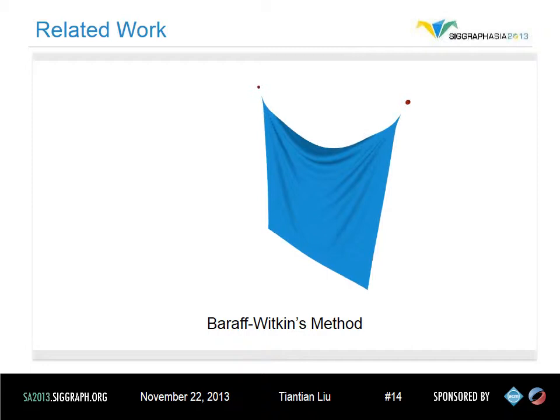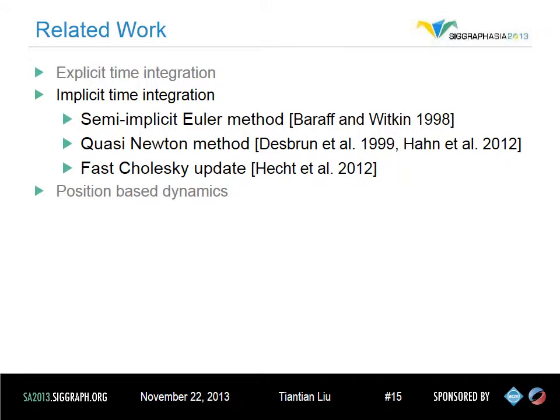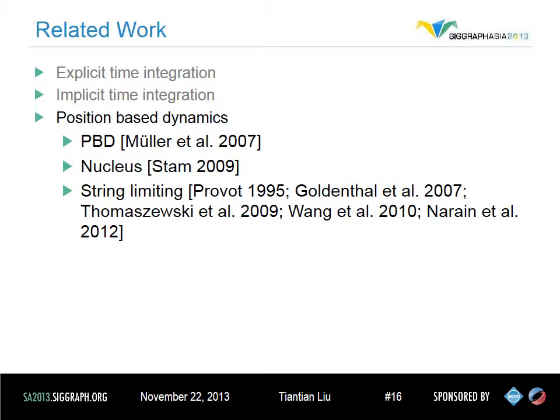Most implementations of semi-implicit Euler's method take advantage of conjugate gradient solvers. However, in order to make the system matrix positive definite and keep a good condition number, the time step size is still limited. Instead of solving the system using Newton's method, a quasi-Newton method that approximates the Hessian using constant matrices has also been used in time integration. Alternatively, a recent work proposed scheduled updates of Cholesky factors, trading off accuracy of the Hessian for more efficient amortized evaluation.